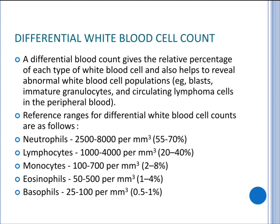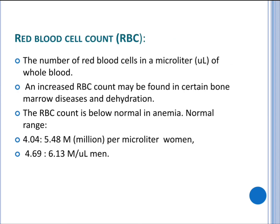Continuing the differential white blood cell reference ranges: monocytes 100 to 700 per millimeter cubed, 2 to 8 percent; eosinophils 50 to 500 per millimeter cubed, 1 to 4 percent; basophils 25 to 100 per millimeter cubed, 0.5 to 1 percent.